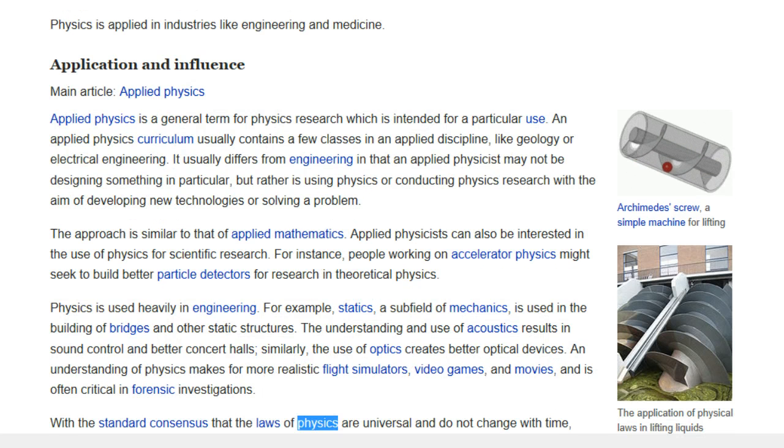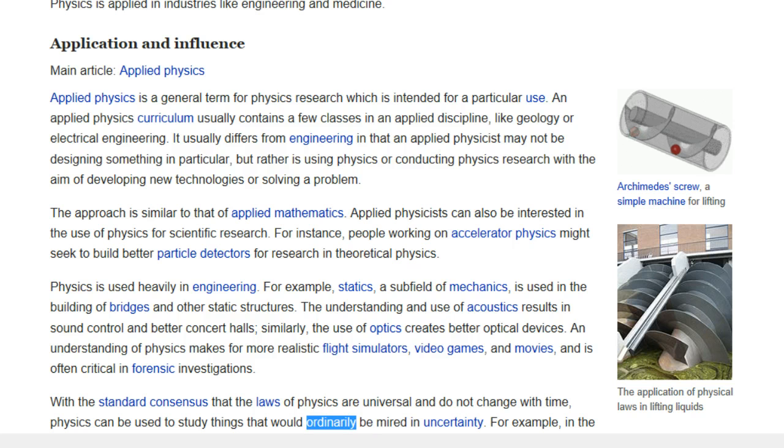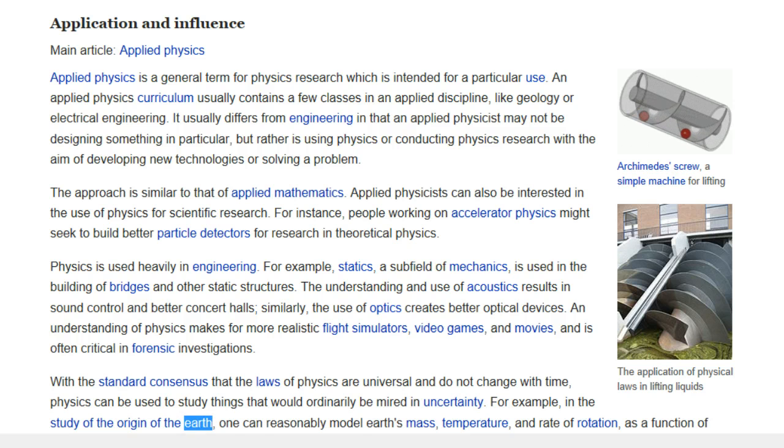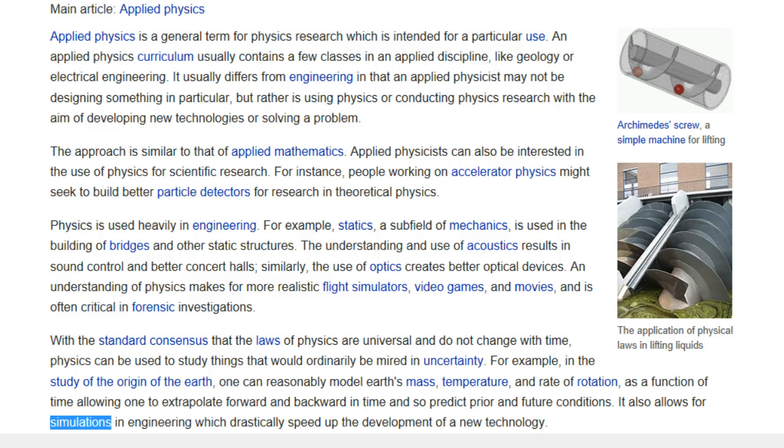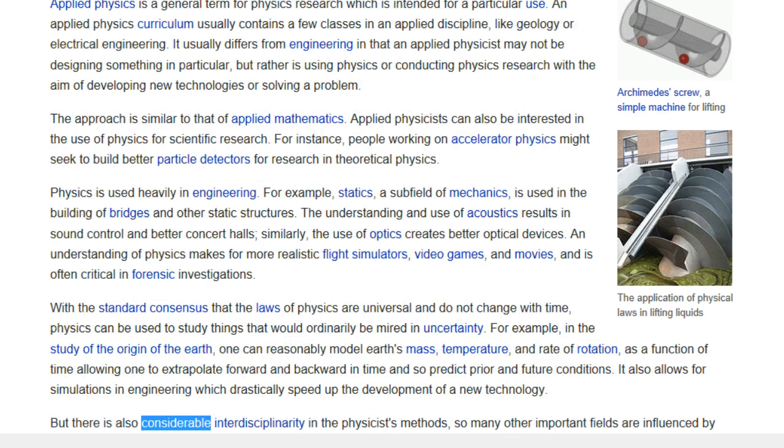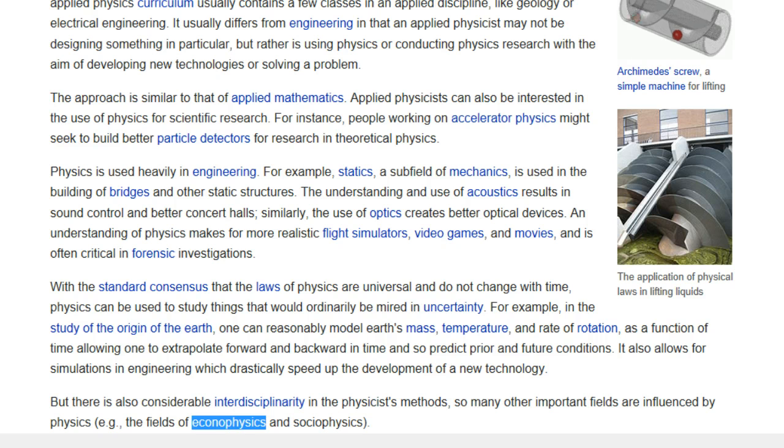With the standard consensus that the laws of physics are universal and do not change with time, physics can be used to study things that would ordinarily be mired in uncertainty. For example, in the study of the origin of the Earth, one can reasonably model Earth's mass, temperature, and rate of rotation, as a function of time allowing one to extrapolate forward and backward in time and so predict prior and future conditions. It also allows for simulations in engineering which drastically speed up the development of a new technology. But there is also considerable interdisciplinarity in the physicists' methods, so many other important fields are influenced by physics, e.g., the fields of econophysics and sociophysics.